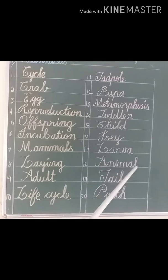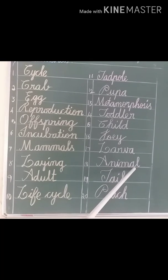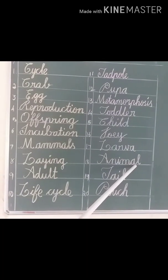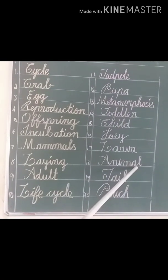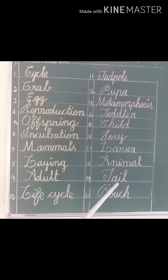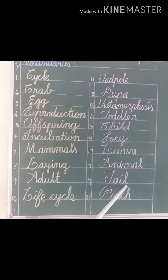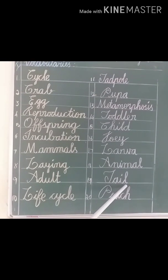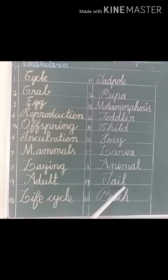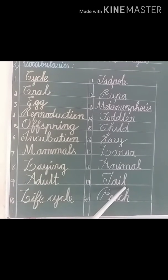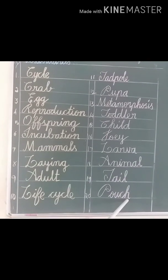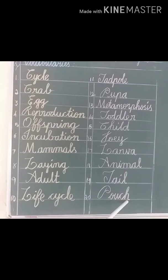Animal — it means a creature that is not a bird, a fish, an insect, or a human. Tail — it means the part at the end of the body of an animal. Pouch — it means a small bag.